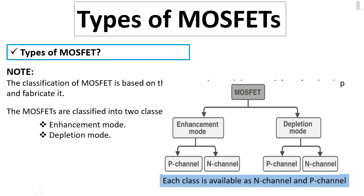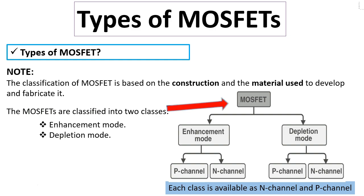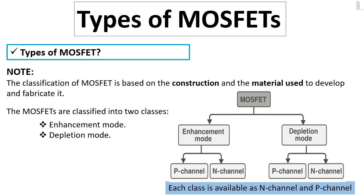As you can see in this block diagram, MOSFETs are divided into two classes — enhancement mode and depletion mode — and each class is available as n-channel and p-channel. We're going to see in the next slides all about n-channel MOSFETs and p-channel MOSFETs and the difference between them.